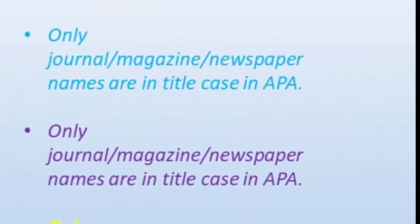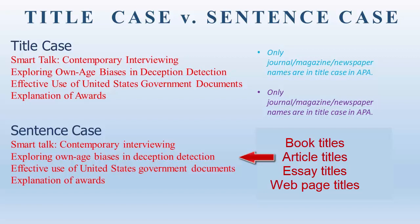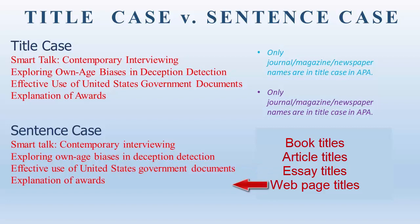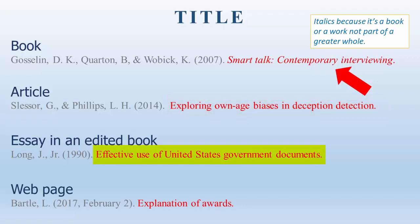The notes on the right read: only journal, magazine, and newspaper names are in title case in APA. Looking at it another way, article titles are in sentence case, book titles are in sentence case, an essay's title in an edited book is in sentence case, and web page titles are in sentence case. In the first example, the title of the book is in sentence case and is italicized because books are italicized in APA, ending with a period. The article's title is in sentence case, followed by a period. The essay's title is in sentence case, followed by a period, and the web page's title is in sentence case, followed by a period.